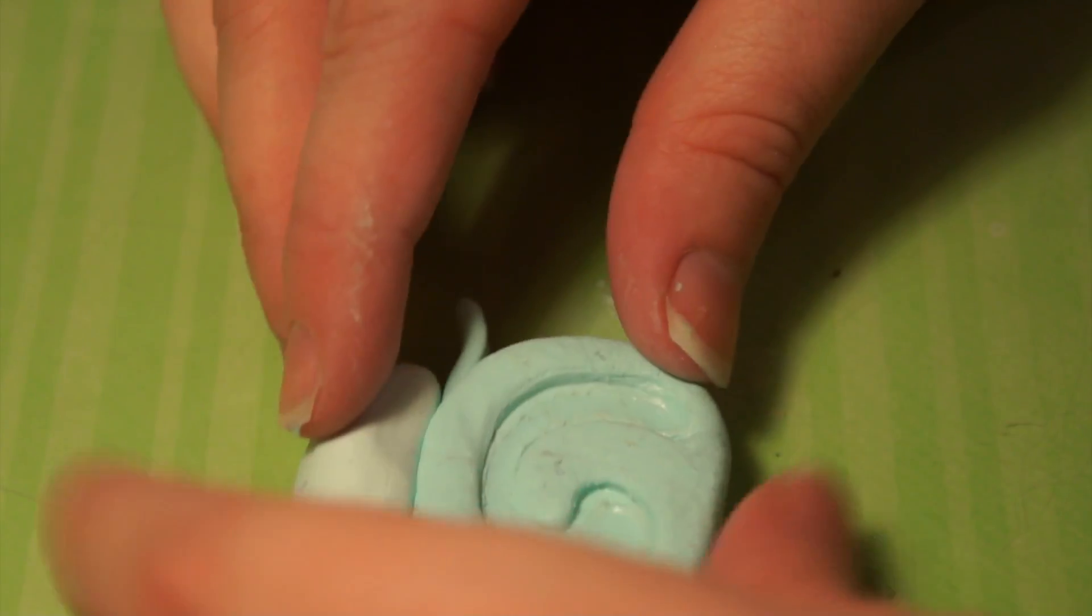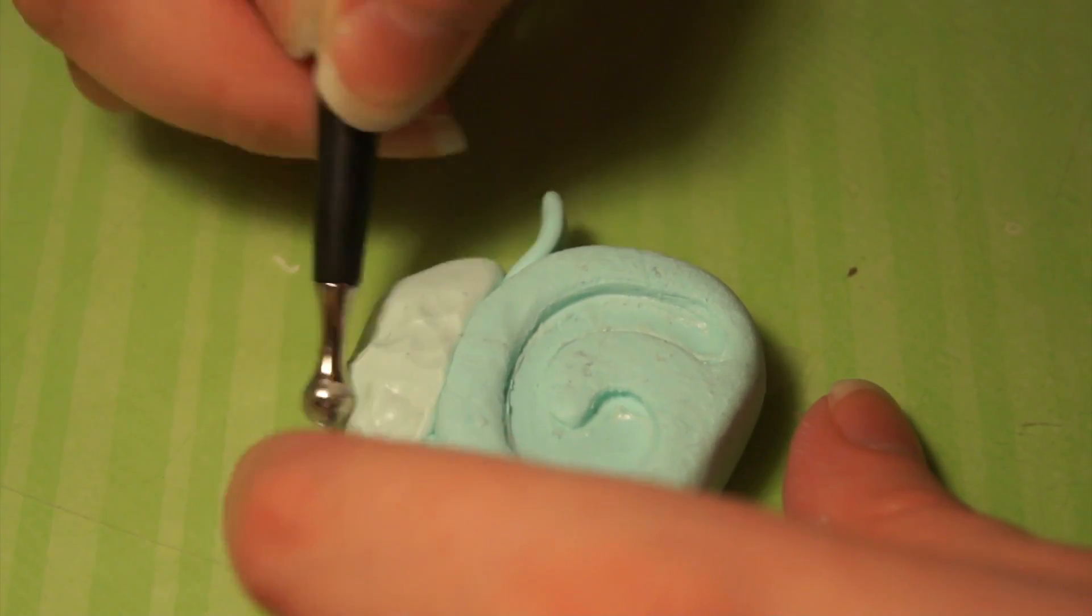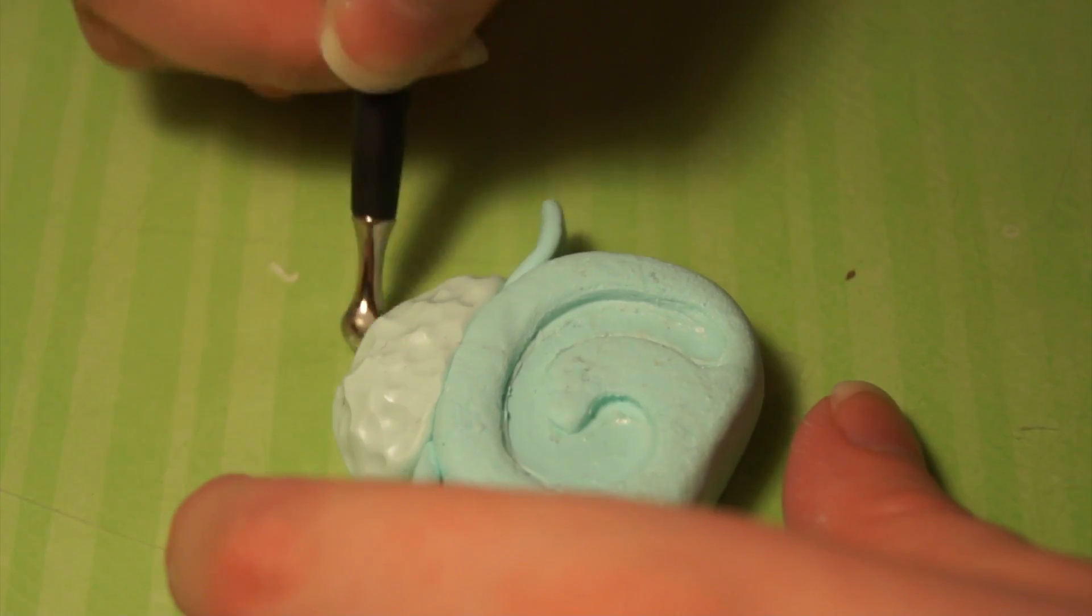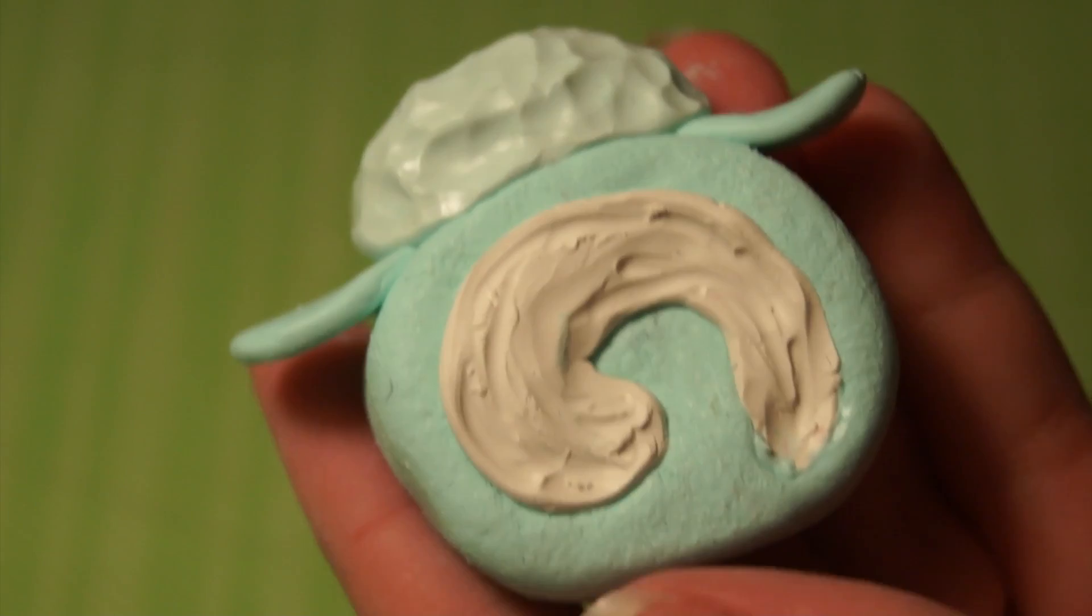Then I'm going to attach his little fluffy head parts, so I just mixed some mint with some white and I'm just going to use a ball tool to kind of poke at it to make it look like it's fluffy. And then I'm going to add the cream.